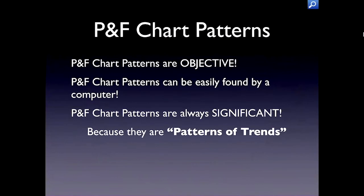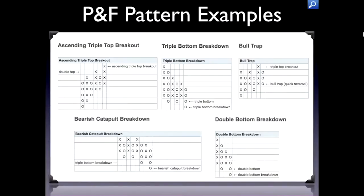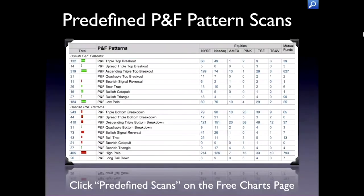PNF has many chart patterns, and the really nice thing about them is that they're objective — not subjective. Bar and candlestick chart patterns are a little in the eye of the beholder; one person's rising triangle is another person's head and shoulders. PNF patterns, on the other hand, have very clear rules — there's no argument about whether they exist, and the computer can find them. They're patterns of trends because the underlying X's and O's represent trends on the bar chart. Here's an example of a breakdown where the O's go below the previous column of O's.